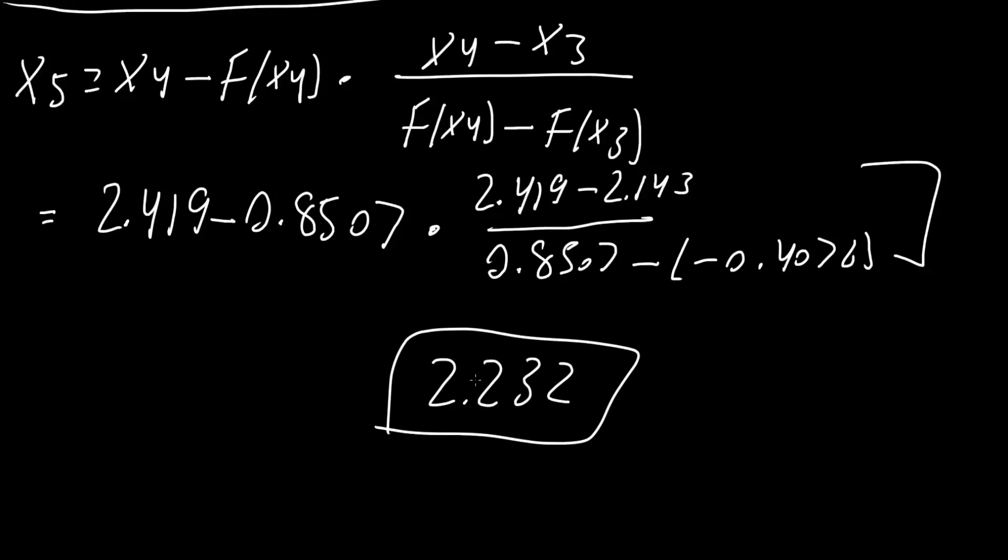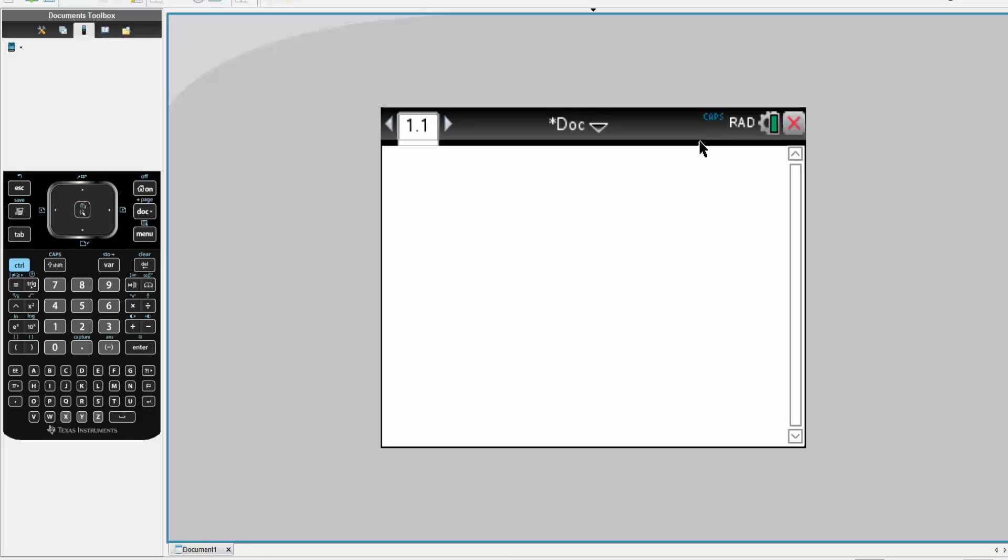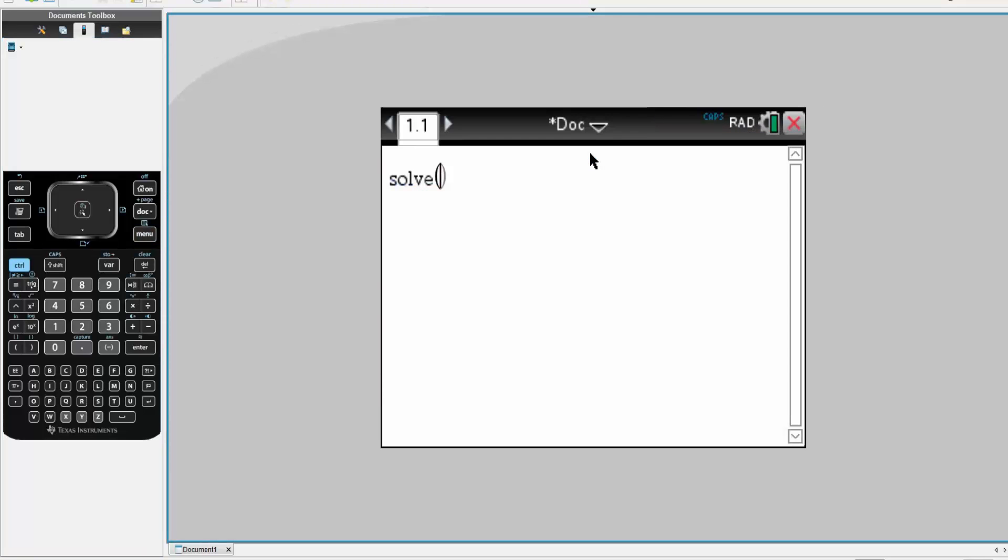Now we want to ask, is this a pretty good approximation? We did four iterations. Using a calculator, I can see what the exact value would be. So let's do that. So I'll plug in my TI-Inspire CX CAS, and I will write down the equation. So we hit menu, algebra, solve.